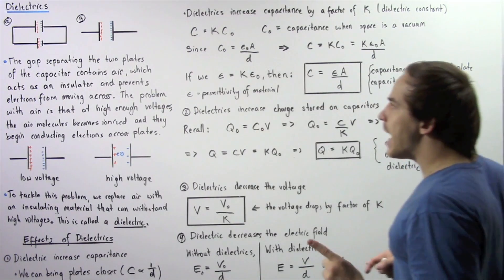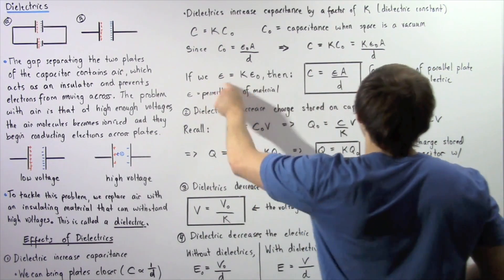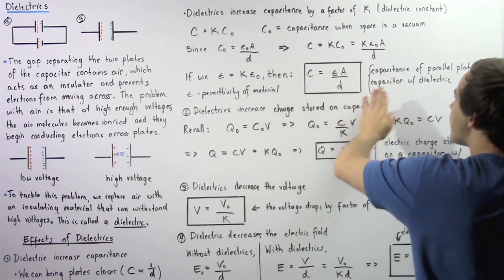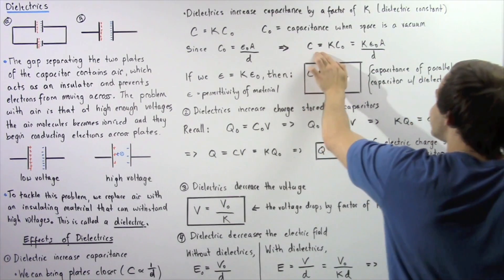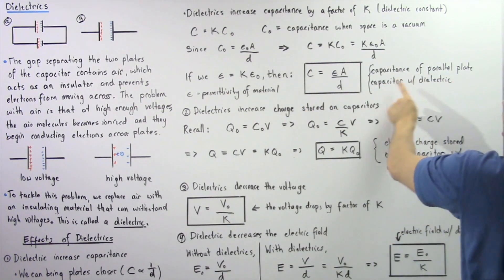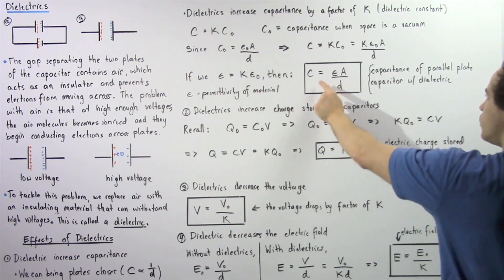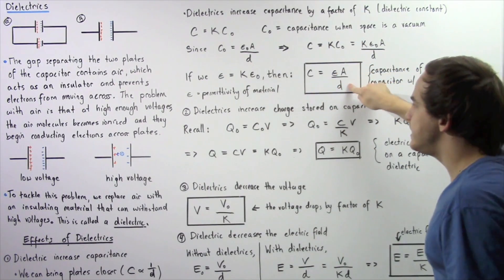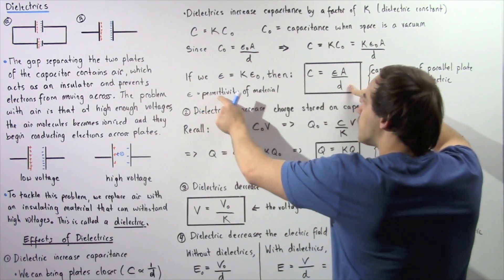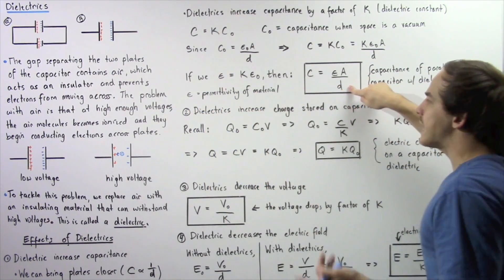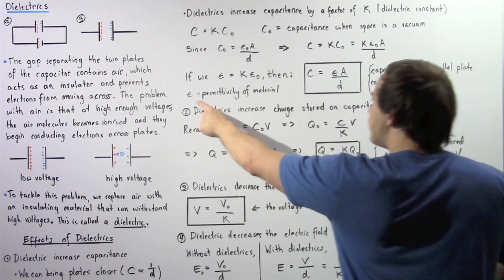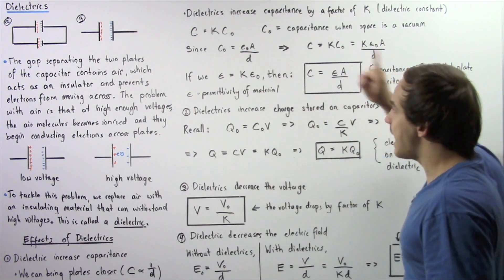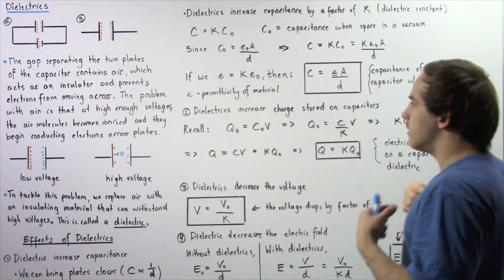If we define a new constant epsilon (ε) as the product of K and ε0, then the capacitance of our parallel plate capacitor with the dielectric is equal to ε times A divided by D, where epsilon is known as the permittivity of the dielectric material. Epsilon is the product of the dielectric constant K and the permittivity of free space ε0.